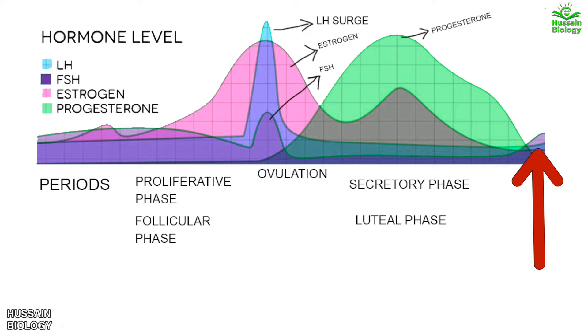This is how the menstrual cycle drives in the female reproductive system, comprising two sub-cycles — the ovarian cycle and the uterine cycle — running together in the ovaries and uterus.